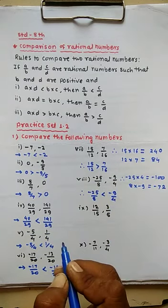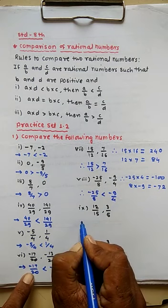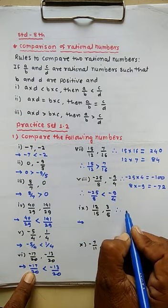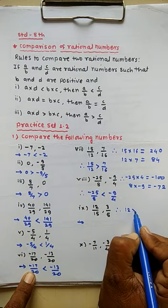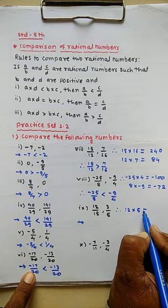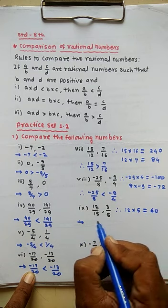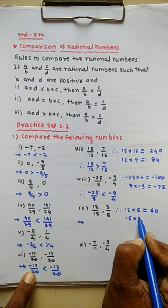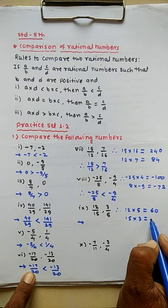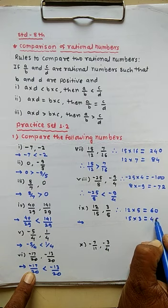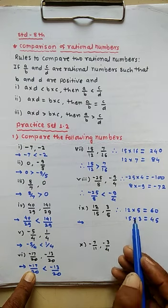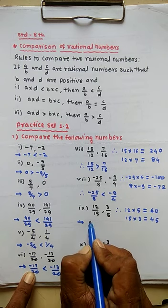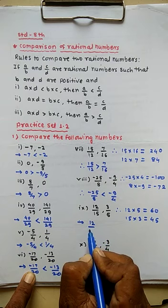Example 9: cross-multiply. First multiply: 12 multiplied by 5 equals 60. Second multiply: 15 multiplied by 3 equals 45. The first multiply is greater than the second, so the first rational number is greater than the second number.